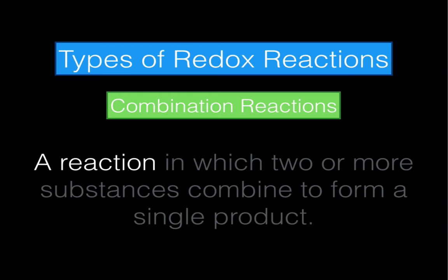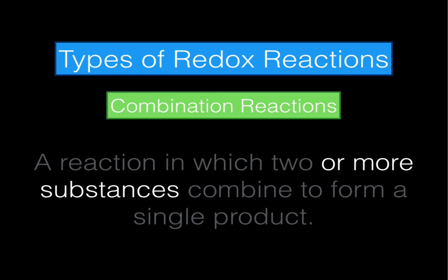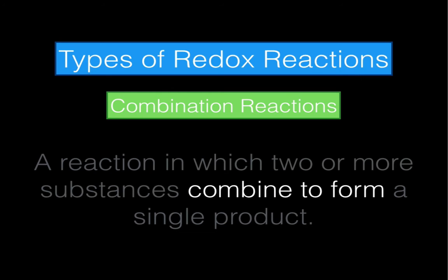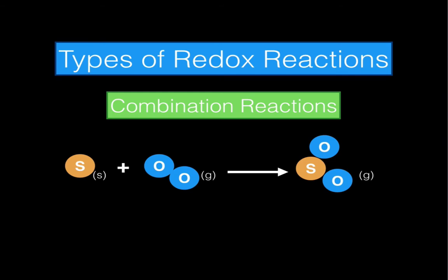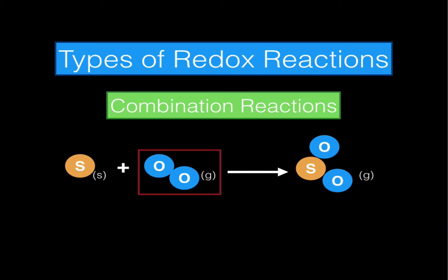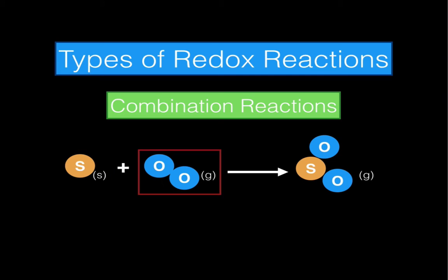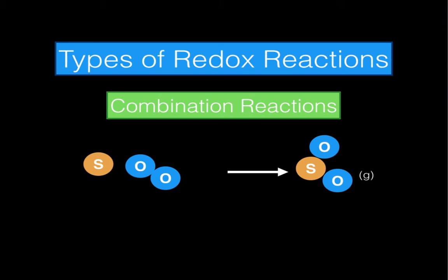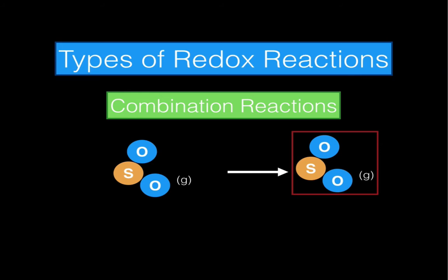A combination reaction is a reaction in which two or more substances combine to form a single product. Here I have an example of such a reaction. On my reactant side I have sulfur and I have oxygen — two elements that are going to eventually combine. What will happen is that sulfur and oxygen will come together, a reaction will occur, and I produce a brand new compound: sulfur dioxide.